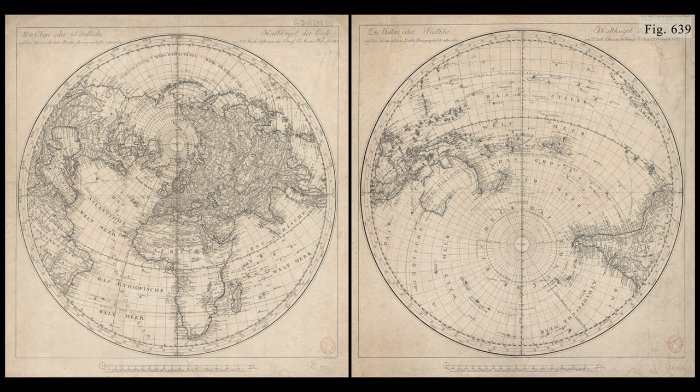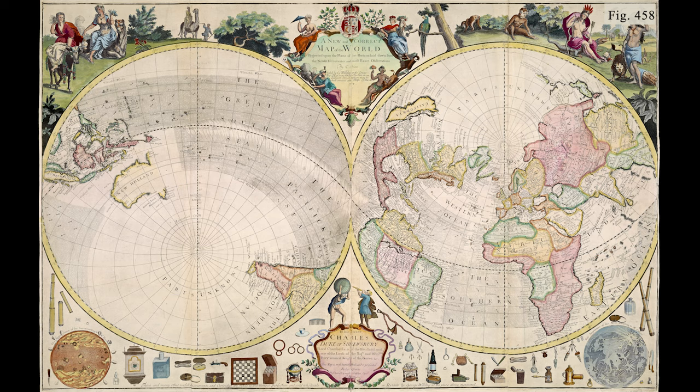In its basic form, the double hemisphere world map depicted the Americas in one hemisphere, and Europe, Africa, and Asia in the other. A few geographers played with this by using an oblique aspect and centering a hemisphere on Western Europe. This resulted in one hemisphere dominated by land and the other dominated by water. A number of such maps were made, highlighting the physical division between the terrestrial and the marine, and also making political statements by centering the land hemisphere on a given nation's capital city.